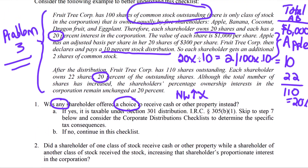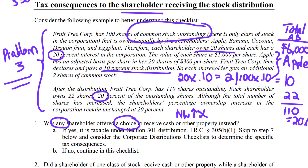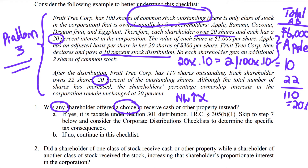If Fruit Tree said shareholders could choose either a 10% stock distribution or $2,000 cash, even if all shareholders choose the stock, it's still taxable because there was a choice to receive cash or property. It would be treated as a Section 301 distribution, analyzed under the normal corporate distribution checklist. We also need to look at Step 7 to determine the adjusted basis of the new shares of stock received.